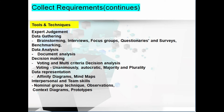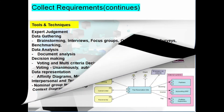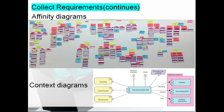Affinity diagrams are an important technique in which ideas generated from any requirements gathering technique are grouped by similarities; each group of requirements is then given a title. This sorting makes it easier to see additional areas of scope that have not been identified. Data items can also be organized by requirements categories: business requirements, stakeholder requirements, solution requirements, transition requirements, and project requirements.